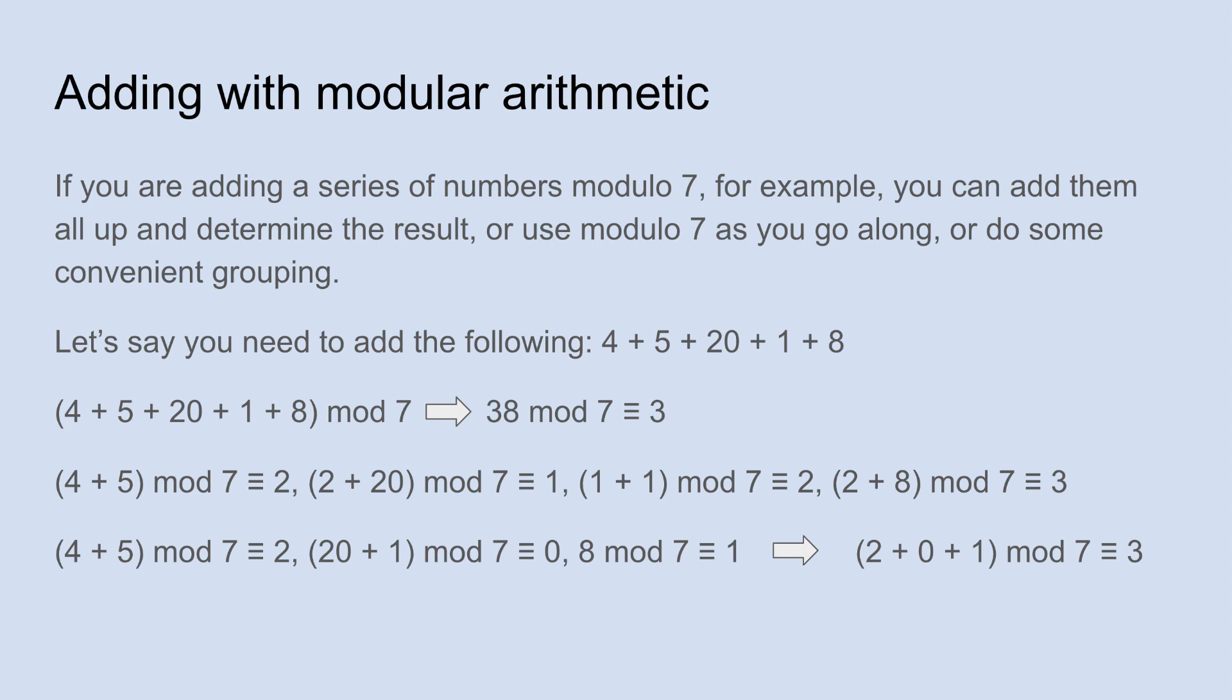You could also group by convenience. So you could say, well, 4 plus 5 is 9. 9 mod 7 is 2. But then we have a 20 and a 1 together. And 20 plus 1 mod 7 is just 0, because 21 is a multiple of 7. And then finally 8 mod 7 is just 1. So really all you have to do is add 2 plus 0 plus 1, and that gives you 3.